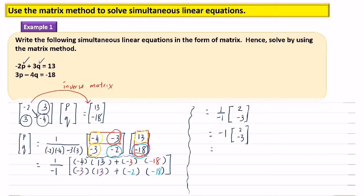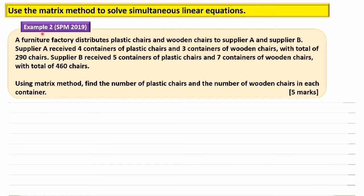So the answer is: negative 1 times negative 2 equals negative 2; negative 1 times negative 3 equals 3. Therefore, the value of P equals negative 2 and the value of Q equals 3.